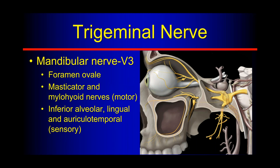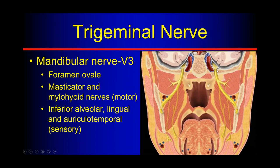V3 goes down through a valley, then splits into an anterior and posterior division. One division gives off all the muscles of mastication, a branch comes forward to become the lingual nerve, and a branch goes into the mandible through the alveolar foramen to come out the mental foramen anteriorly at the midline.